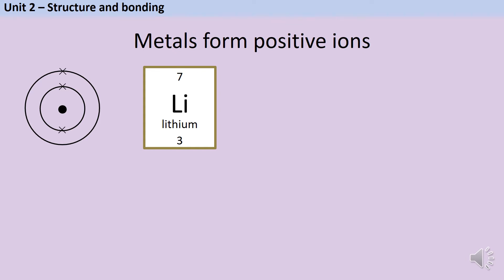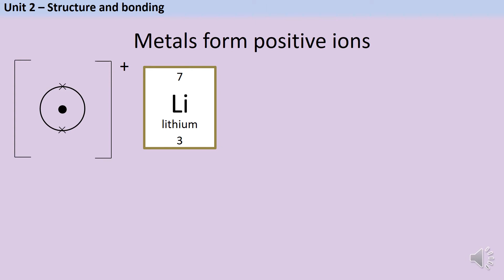Looking at the lithium atom, in order for the second shell to be filled up it would need to gain seven electrons, but we could just lose that second shell completely by removing one electron. Remember, these shells aren't physical things you can touch — they're like the orbits of a planet. So rather than gaining seven electrons, lithium loses one.